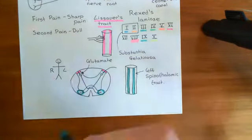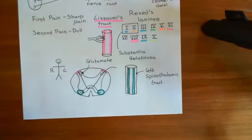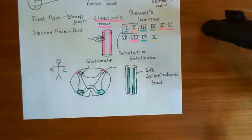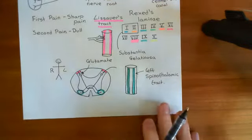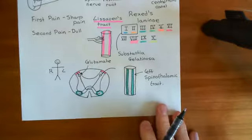The spinothalamic tracts will go through portions above the spine as well — through the medulla, the pons, the midbrain — until they finally get to the thalamus.